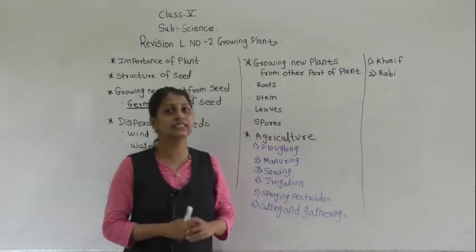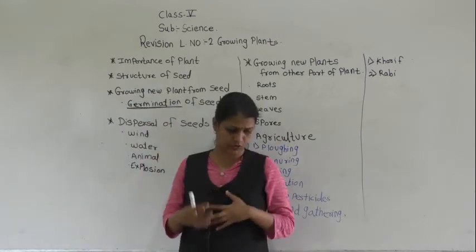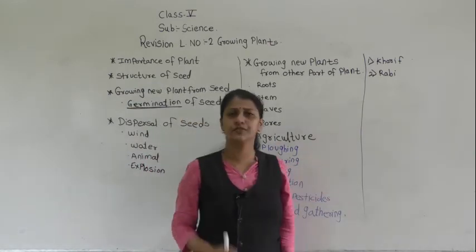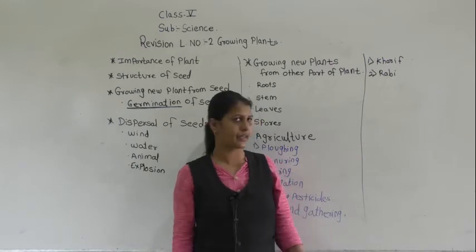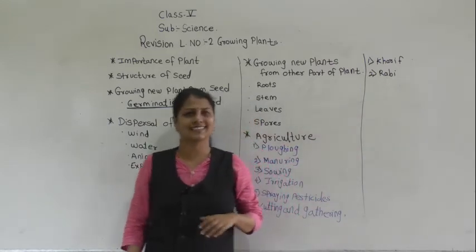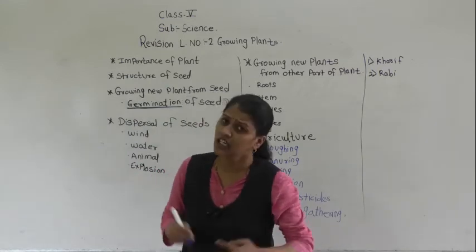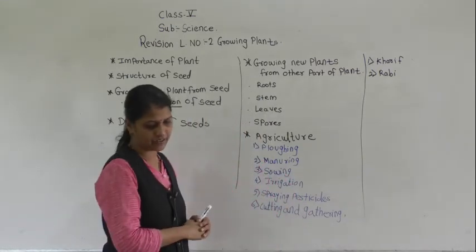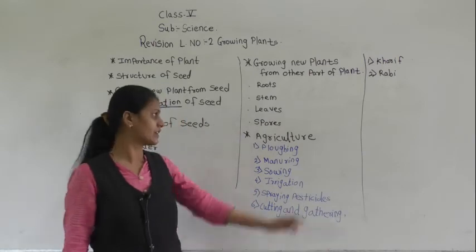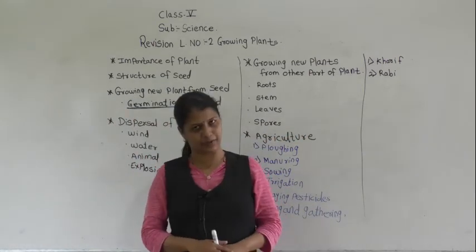The next is Rabi crop. Crops which are grown from November to April are called Rabi crops.